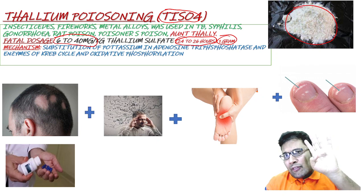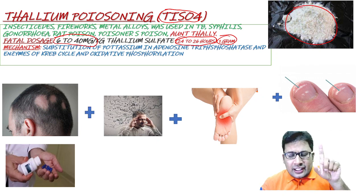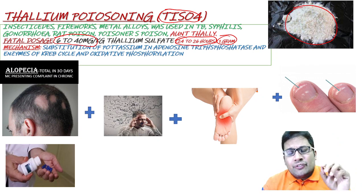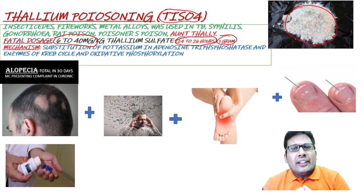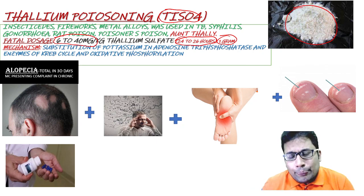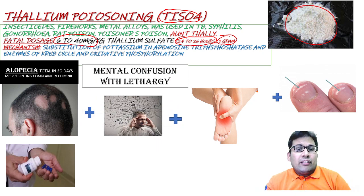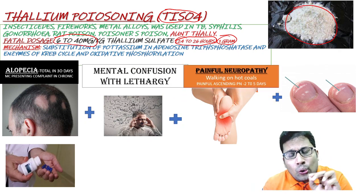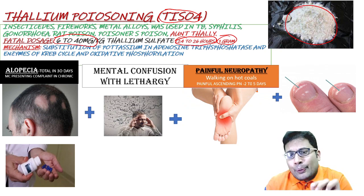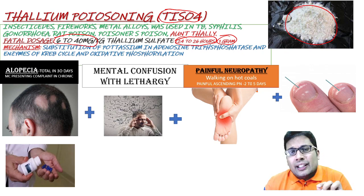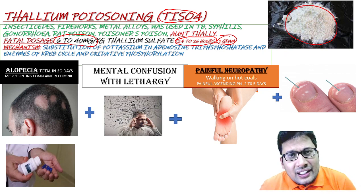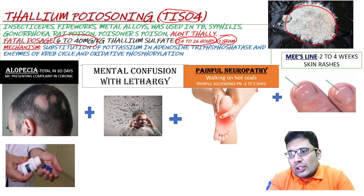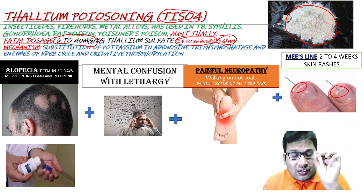There are four important clinical features. One: diffuse alopecia — the most common presenting complaint, completed in 30 days. Two: mental confusion with lethargy. Three: peripheral neuropathy, described as 'working on hot coal,' which is painful ascending polyneuropathy occurring 2 to 5 days after intake of the poison. Four: the Mees' line, which is also seen in arsenic.